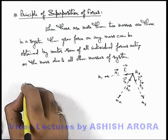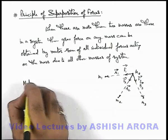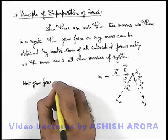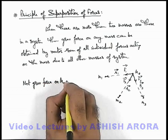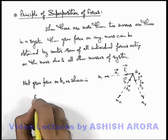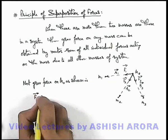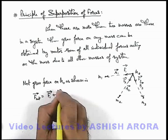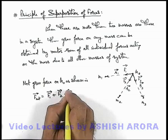So in this situation we can simply state the net gravitational force on m not as shown is f1 vector plus f2 vector plus f3 vector. This is the way how we write.